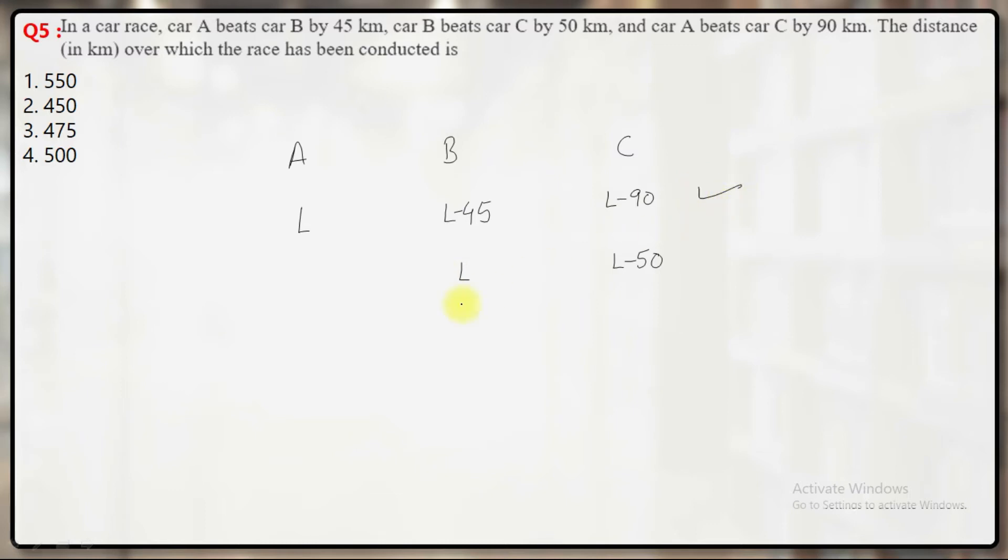So, if you look at the first case, if you try to compare the ratio of distances, that would be L minus 45 by L minus 90 for B and C. This must be the ratio of speeds also. And the ratio of speeds will remain same, whatever may be the race.